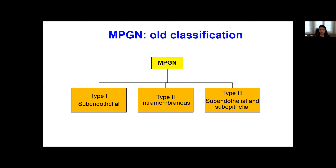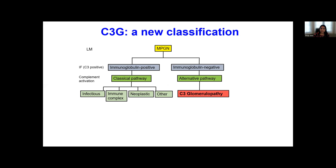Years ago, we used to classify these diseases — if you saw the membranoproliferative pattern on light microscopy, then that was divided into type 1, type 2, or type 3 based on where the deposit was. Type 1 was subendothelial, type 2 was intramembranous, and type 3 was subendothelial or subepithelial. What we know now is that the immunofluorescence is critical to figure out if you're looking at a C3G, an alternative pathway defect, or more of a classical lectin pathway defect.